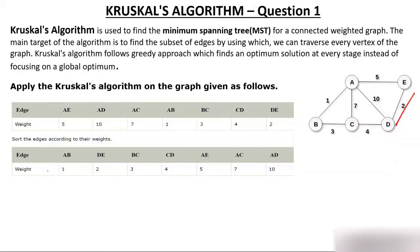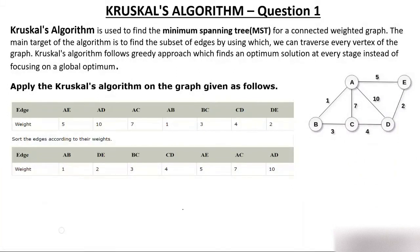The first step of Kruskal's algorithm is: from the given graph, make a table containing edge and weight, and arrange them in increasing order. Now, make a new graph containing only the vertices — not edges — and start connecting edges one by one from the sorted table. A spanning tree must contain all the vertices.